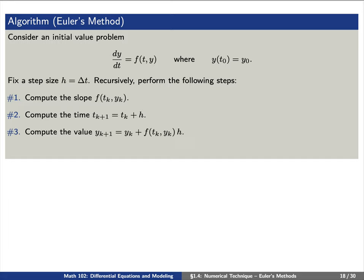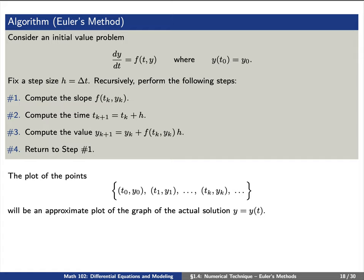Third, we'll compute the new value y sub k plus 1 as y sub k plus f of t sub k, y sub k times our step size h. And finally, we'll just return back to step 1 and do this all over again.